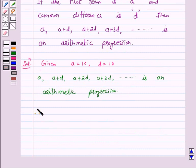Therefore, a which is 10, a plus d which is 10 plus 10, a plus 2d which is 10 plus 2 into 10, 10 plus 3 into 10, and so on is an arithmetic progression.